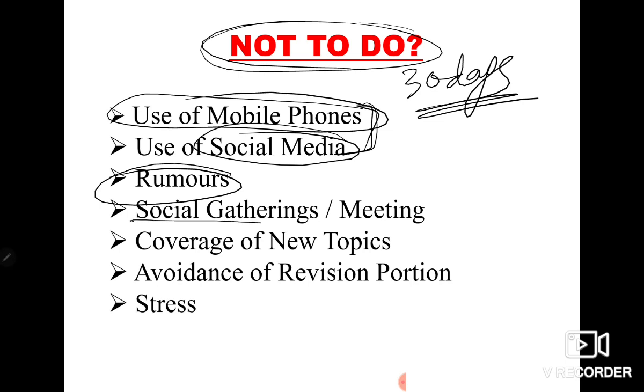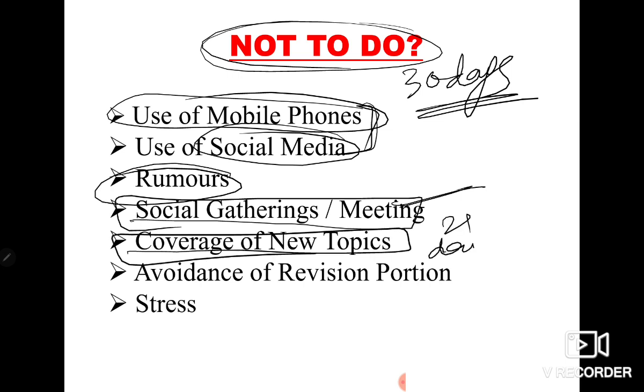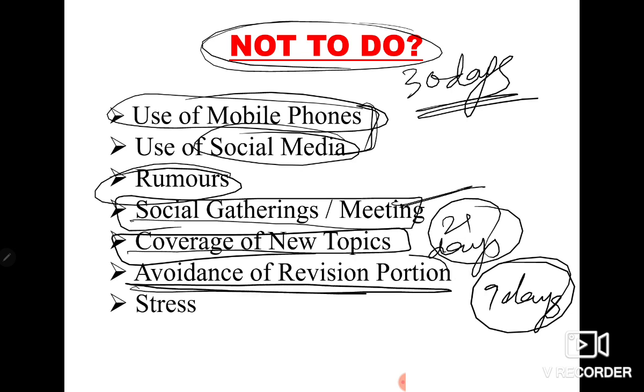Stay away from those rumors. Avoid social gatherings and meetings, meaning we don't have time. We only have one month time in which our schedule of morning, evening and afternoon is already fixed. We don't have time to go anywhere. Coverage of new topics should be avoided. Although in the 21 days study period if you want to do something new you can, but in the 9 days revision schedule that has been made, you should not do new topics. Avoidance of revision portion - if you avoid revision portion that is wrong. This point means that if you made morning schedule, evening schedule, and in afternoon also you kept some other component but avoided revision, that is wrong.